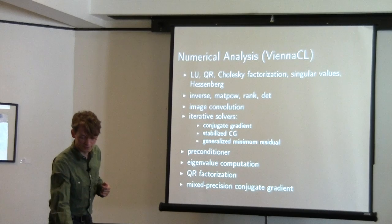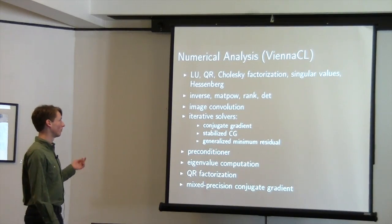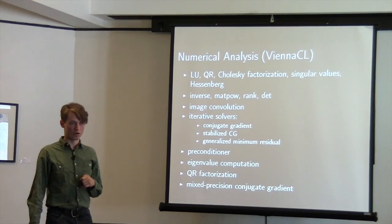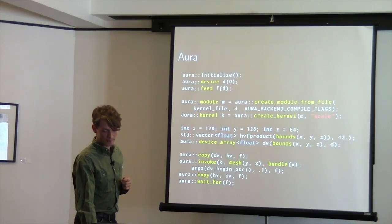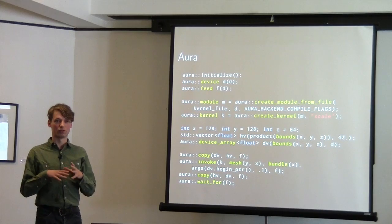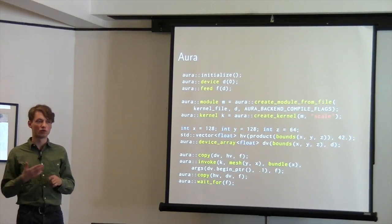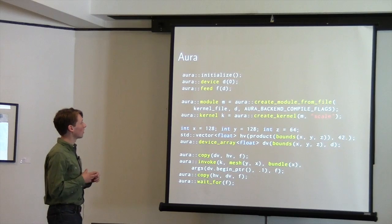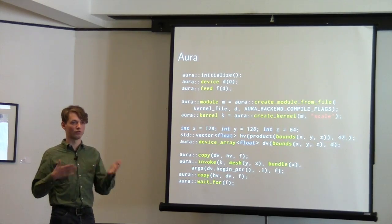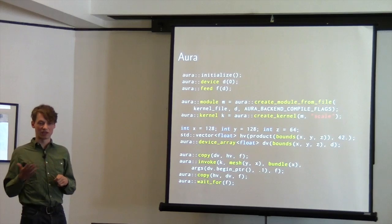For numerical analysis, the best library I found is ViennaCL, with an incredible number of useful algorithms for the GPU. And briefly: my own library, Aura, is very low-level. My goal was to combine the OpenCL and NVIDIA back ends in one concise interface. It covers only the coordination part so far — for computation you still write kernels in the DIY style in either OpenCL or CUDA.